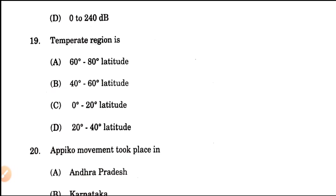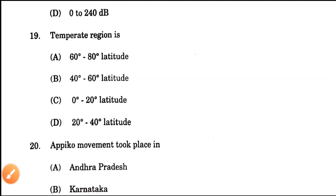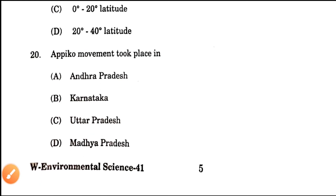Question number 19: Temperate region is what? The temperate zone is the area of the earth which lies between the middle latitudes — middle latitude ranges from 40 to 80 degrees to the north and south of the equator. So the answer will be 40 degree to 60 degree latitude.